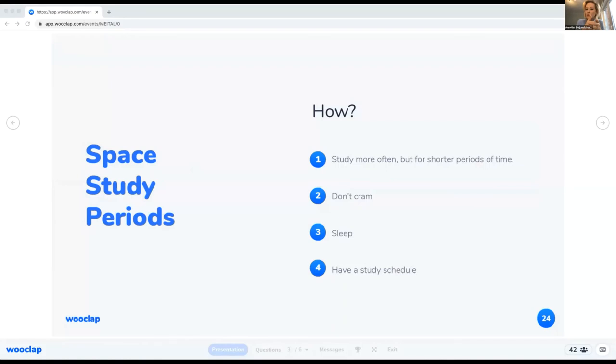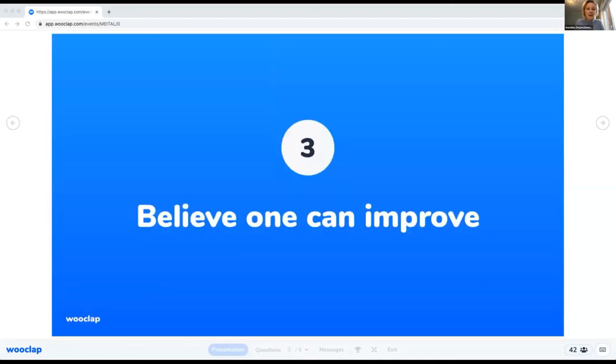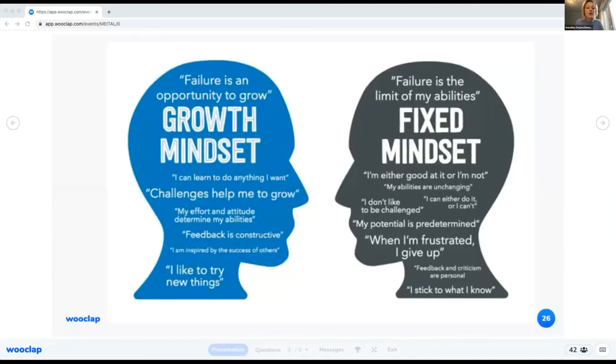And this curve shows how information is lost over time when there is no attempt to retain it, of course. So now let's see how we need to practice the spaced study technique. One, study more often but for shorter periods of time. Two, do not cram at all. Three, sleep, just take naps. And four, have a study schedule.